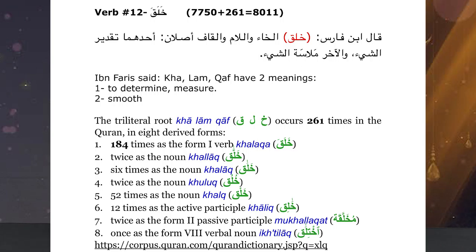Looking at what we have in Corpus Quran, of the 261 times these different forms appear, 184 times they come in the past tense form khalaqa — meaning 'he created.' Allahu Rabbul Alameen, as he is the creator, he created. So the overwhelming majority is in that form.